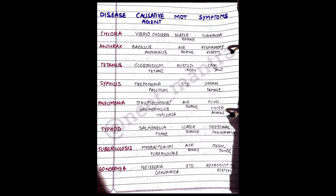Next we have Tuberculosis. It is caused by Mycobacterium tuberculosis. It is airborne or droplet infection and it causes cough and joint pain. Tuberculosis is a major cause of death of patients in India.